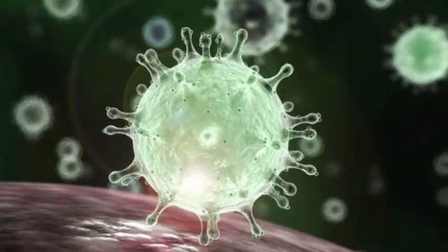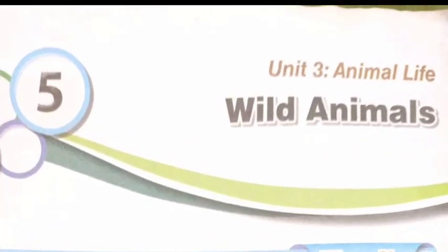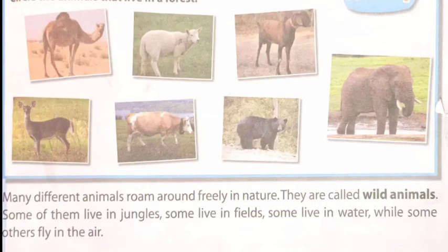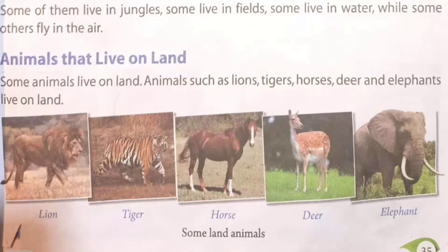Today my topic is wild animals. Open page number 35 of your book. Wild animals: many different animals roam around freely in nature — they are called wild animals. Some of them live in jungles, some live in fields, some live in water, while some others fly in the air.